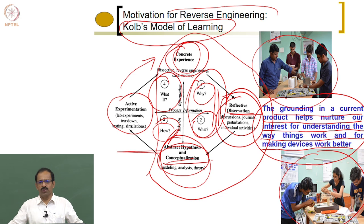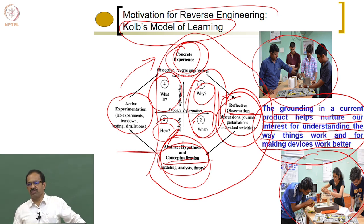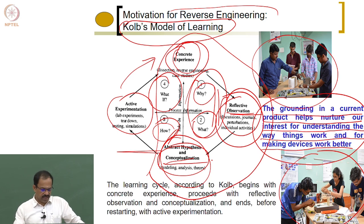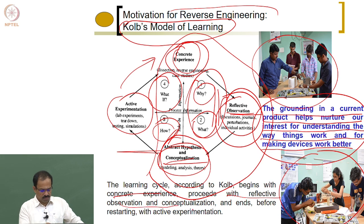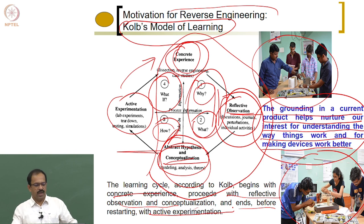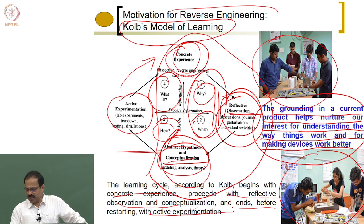It will take some time to come up with new ideas and concepts to make a product better, but the ultimate aim is to see how you improve an existing product. For example, if you open up an iron box, you should find out what is good and bad about it and how to make it a better iron box — then you are becoming a good designer. The learning cycle begins with concrete experience, proceeds with reflective observation and conceptualization, and ends before restarting with active experimentation — this is Kolb's model of learning.